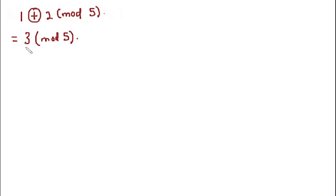But if it's bigger, we'd have to do extra steps. So in this case, the number we have is less than the modulus. So the answer of 1 plus 2 modulo 5 is 3.